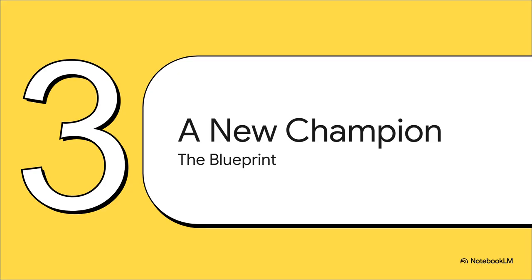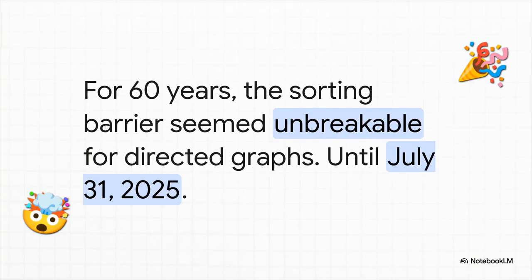After generations of brilliant people running head first into that same wall, one team found a way to use that loophole. They created a whole new blueprint, a way to get the prize, the shortest path distances, without ever having to pick the lock of sorting. The moment that finally broke this 60-year-old deadlock came with a paper from a team of researchers: Randuan, J.I. Mao, Xiao Mao, Xin Kai-shu, and Long Hui-in. They introduced what's called a deterministic algorithm that, for the first time, smashed right through the sorting barrier for complex networks.